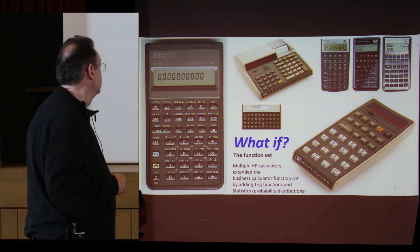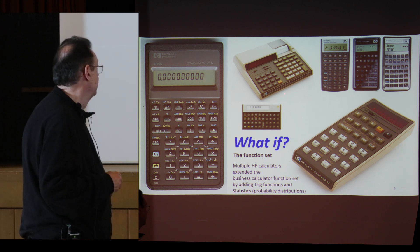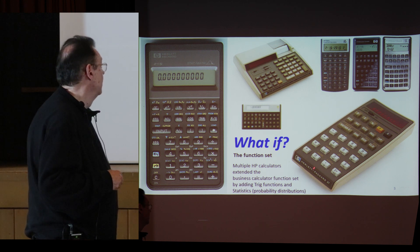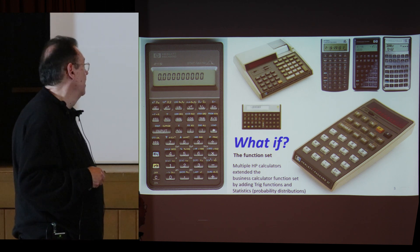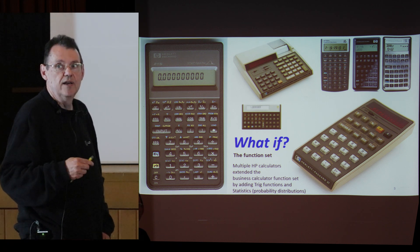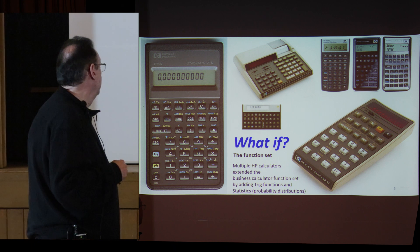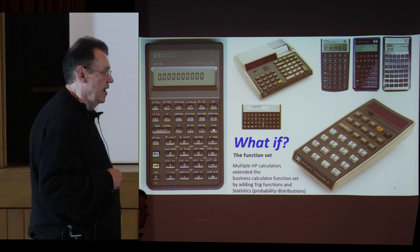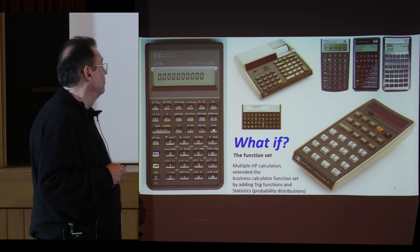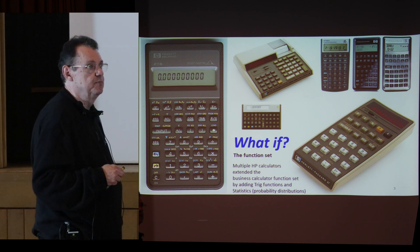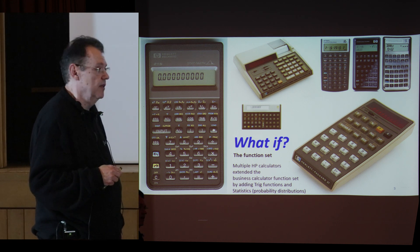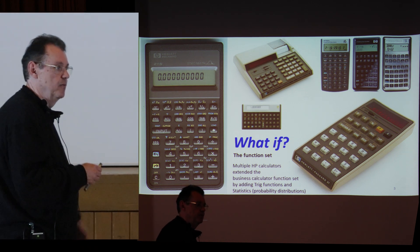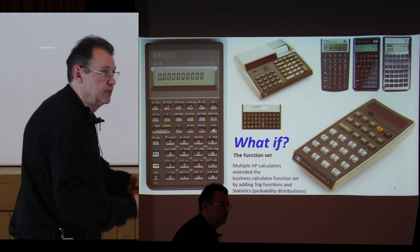Multiple HP calculators extended the business calculator function set by adding trig and statistics. The 91 I talked about was a business calculator that had trig. The 27 is a business scientific that had trig and the financials. The 21 had trig and statistics, but it was algebraic. And then the later versions of the HP business calculators also had trig.